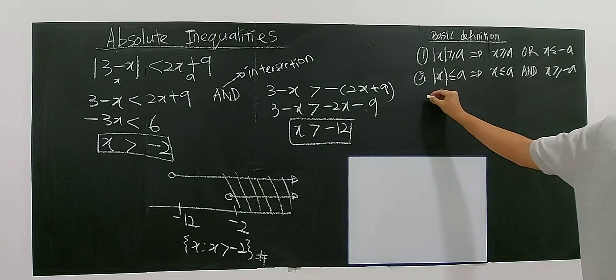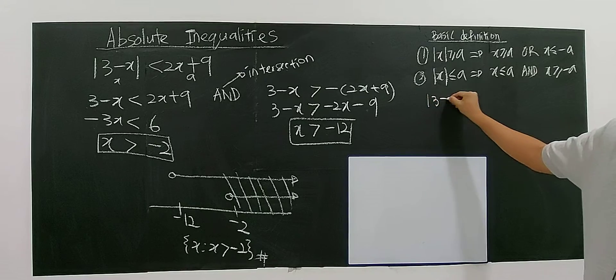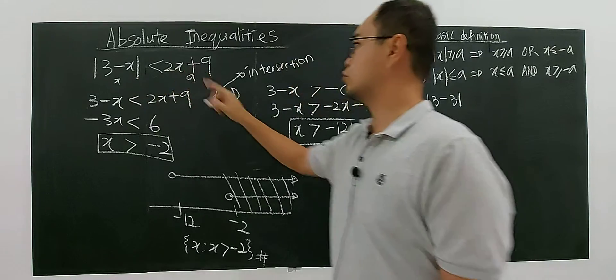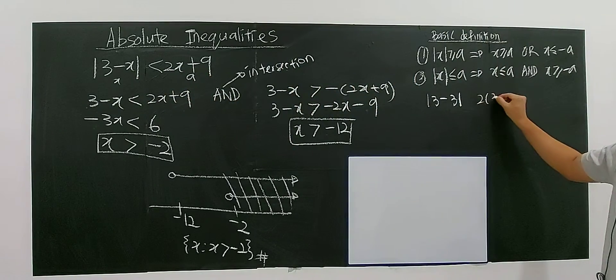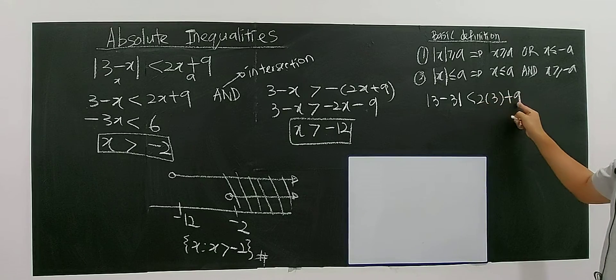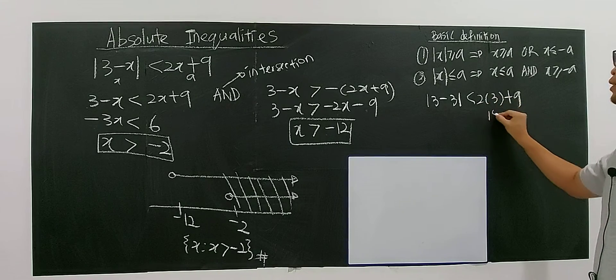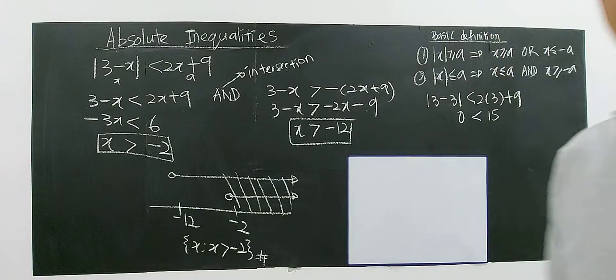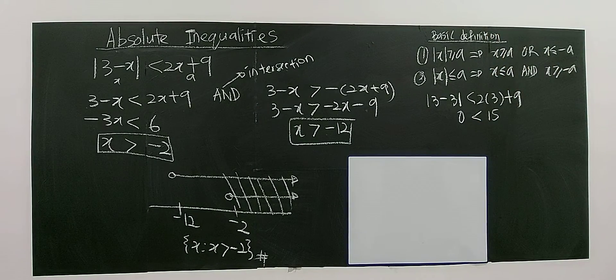So 3. So 3 minus 3 for the left-hand side. You have 3 minus 3. 2 times 3, 2 times 3 plus 9. Yes. This will be 6 plus 9. You have 15. 15, of course, is greater than 0, right? This is a true statement.